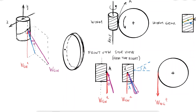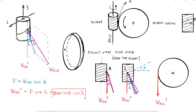We can write the blue vector as the cosine component of W_GW using the pressure angle, and we can write the axial component of W_GW as the cosine component of the blue vector using the lead angle, giving us the axial component in terms of the overall vector. The tangential component of the force can be found with the sine component of the blue vector using lambda, giving an expression in terms of the overall vector W_GW.